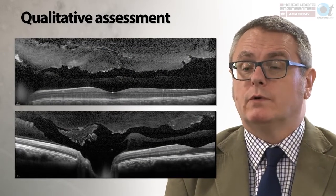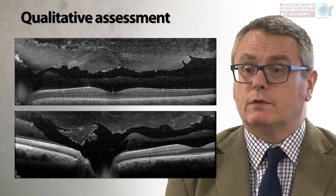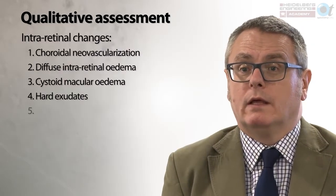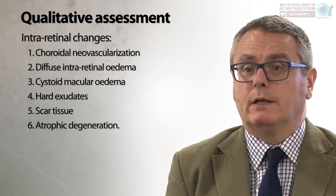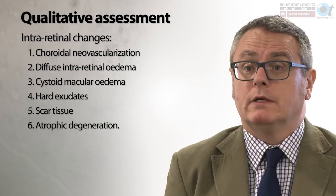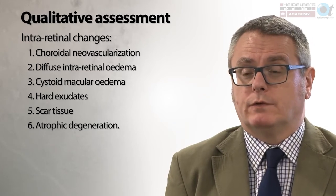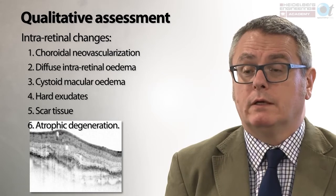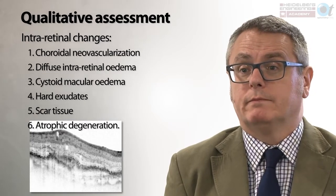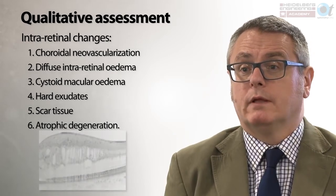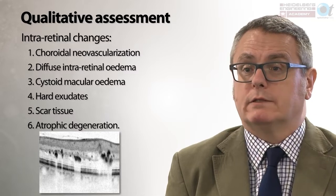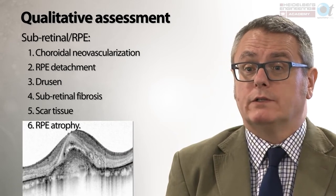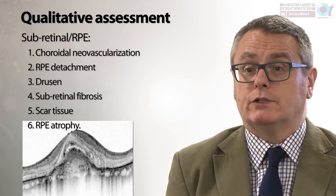By applying a plus-2 diopter defocus to your OCT scanner, you can move the sensitivity of the instrument into the vitreous cavity and almost render the vitreous opaque. Intraretinal changes to look for include choroidal neovascularization, diffuse intraretinal oedema, cystoid oedema, exudate, scar tissue, and atrophic degeneration. Choroidal neovascularization shows increased reflectivity in front of the RPE with associated intraretinal fluid; exudate has a very classical highly reflective appearance on the cross-section. In a subretinal location, look for choroidal neovascularization, RPE detachment, drusen, fibrosis, scar tissue, and atrophy.